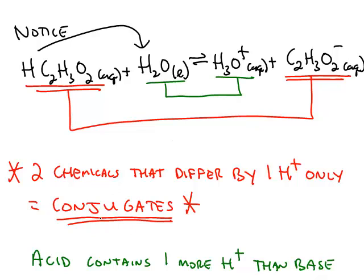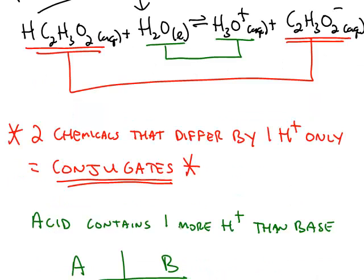Those two types of chemicals are called a conjugate pair. Those are two chemicals where the only difference is one of them has an extra H+. And the chemical that's the acid is always the one that contains the extra H+.